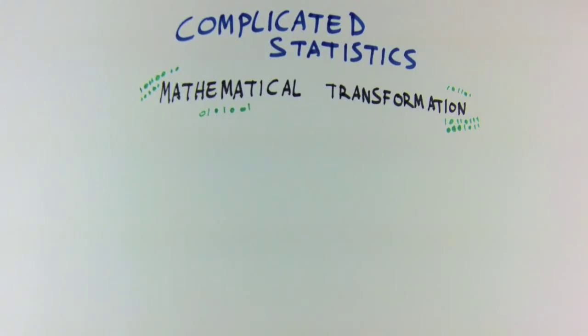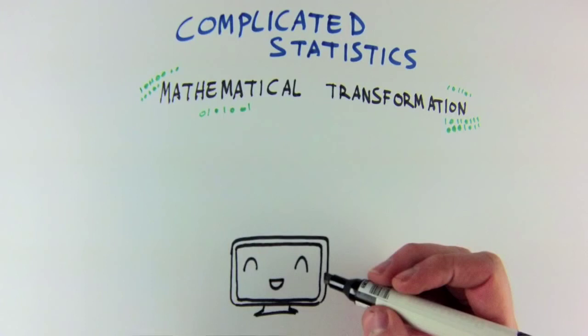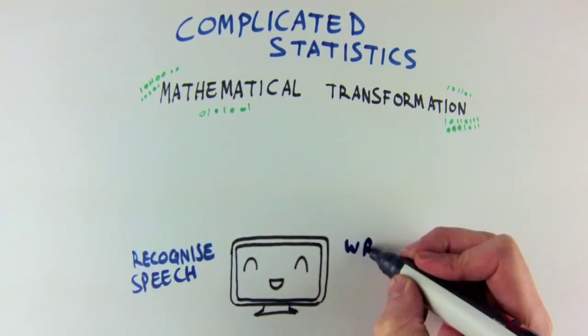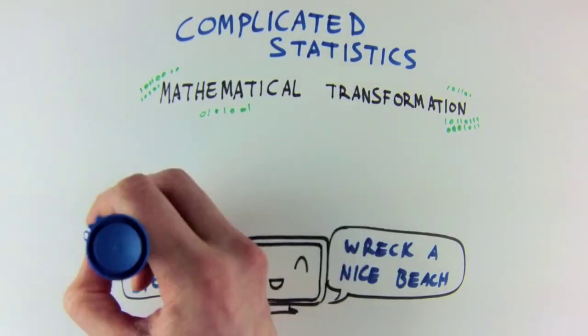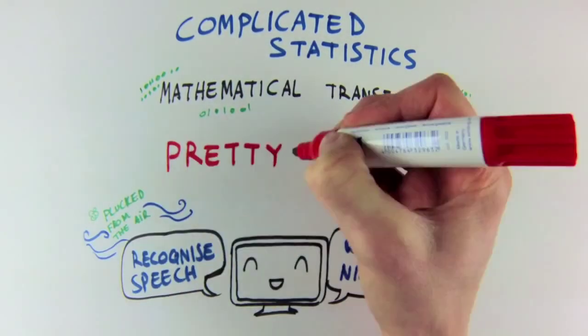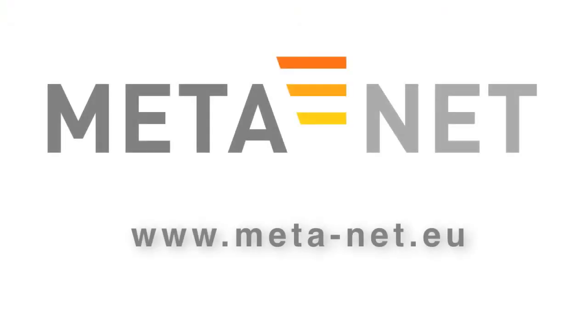As anyone who has used speech recognition software knows, mistakes do happen. All the complicated statistics and mathematical transformations might not prevent recognised speech from coming out as recognised speech, but for a computer to pluck either one of these phrases literally out of the air is still pretty incredible.